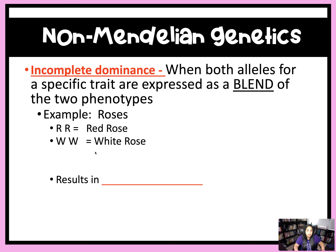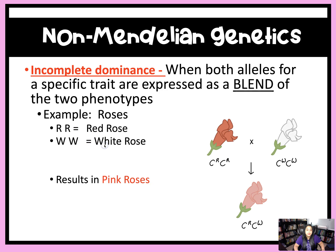They are incompletely dominant. So think back to elementary school when you used to mix colors and find new colors. When you mix red and white, what do you get? That's right, you get pink. So when red and white roses combine, you get pink.